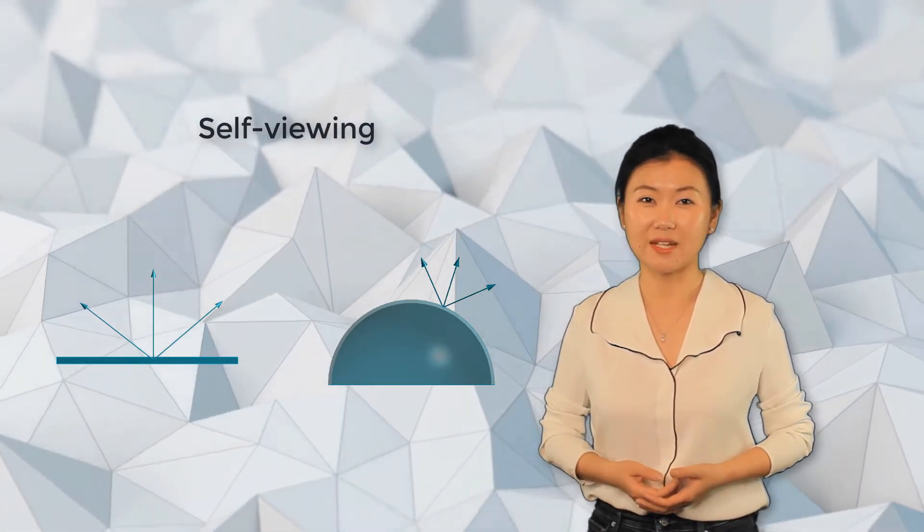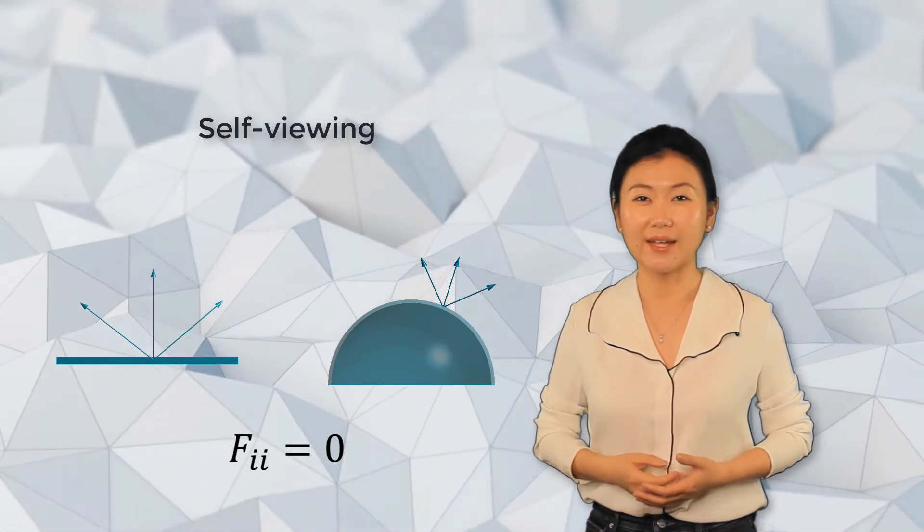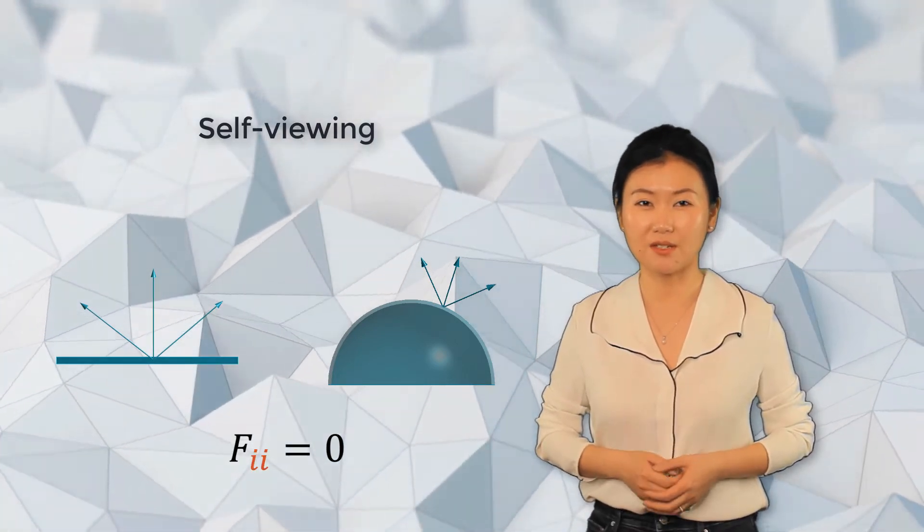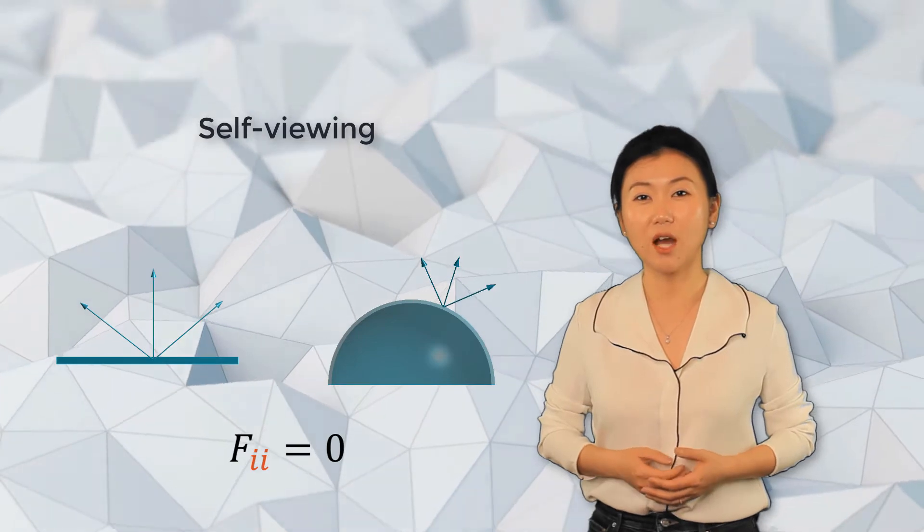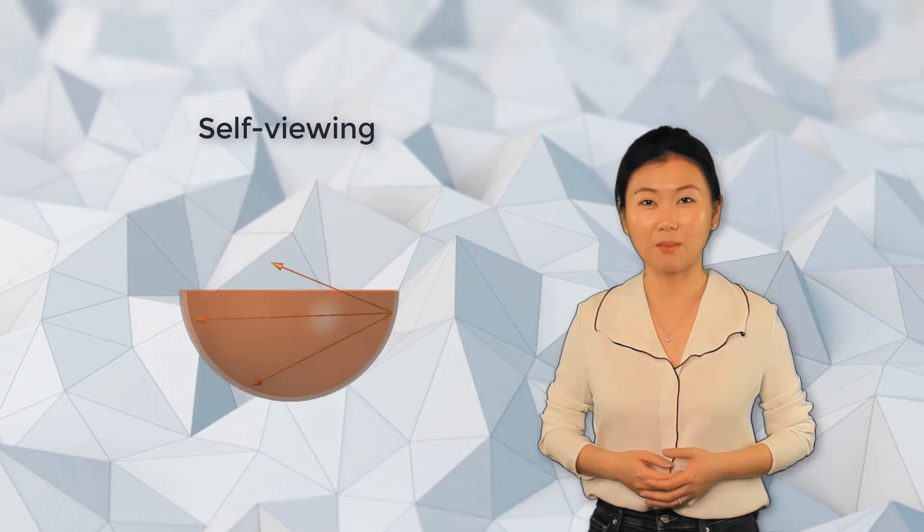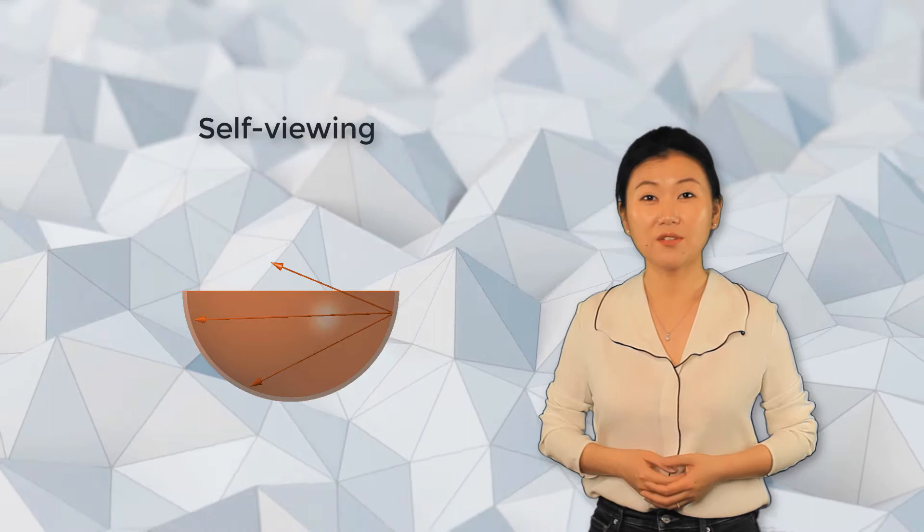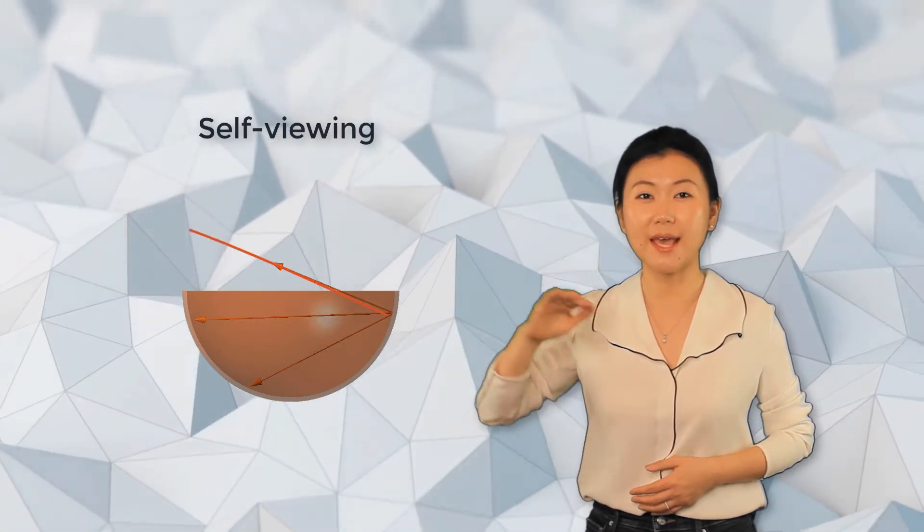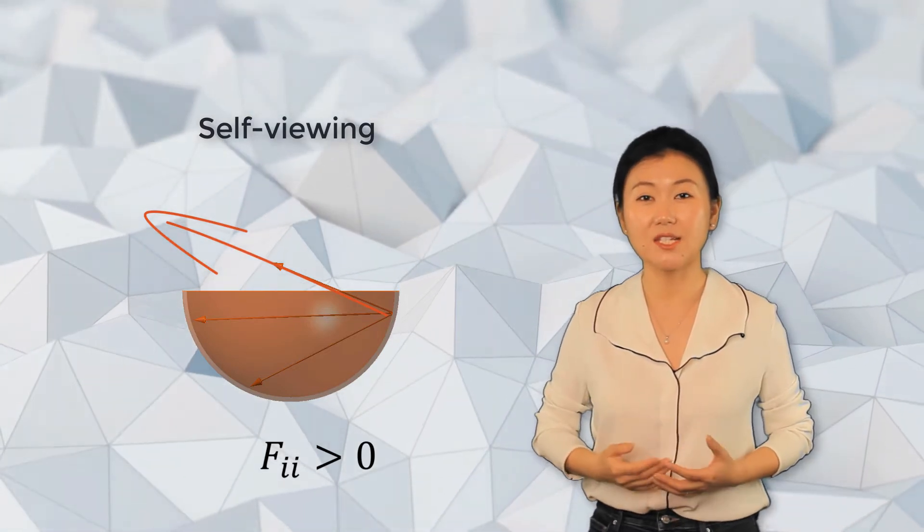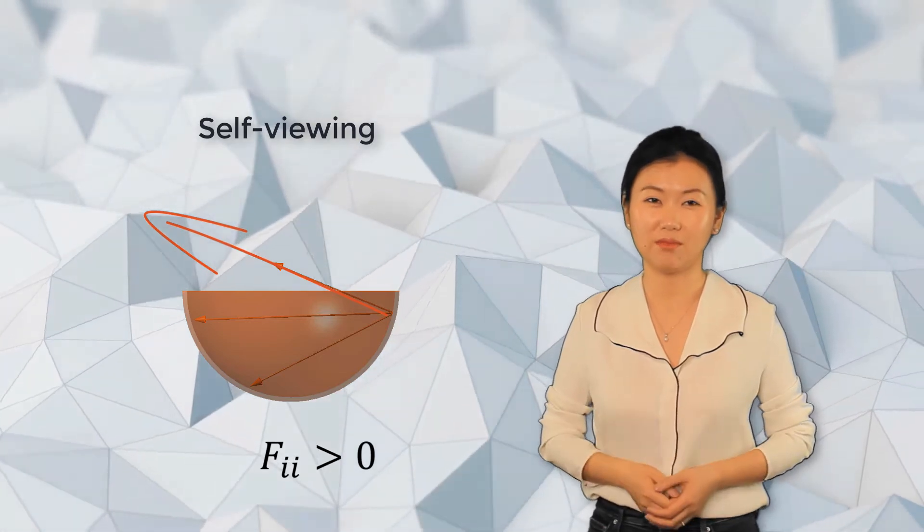Note that we're using double i in the subscript to indicate the self-viewing circumstance. However, for concave surface, if we're looking out from any position on the surface, we can see other parts of the same surface, so the view factor is not zero for the surface. We're showing here our side of view extends beyond the surface, meaning that this concave surface is not the only thing we can see, so the view factor will not exactly equal to one. It will be a value between zero and one that can be found by calculation instead of merely by visual inspection.